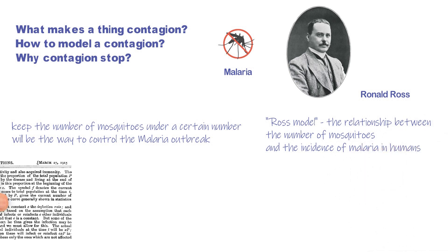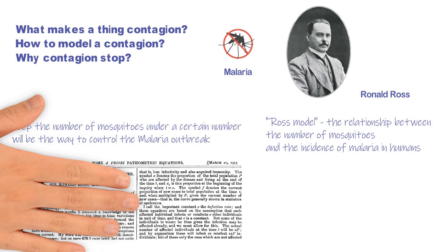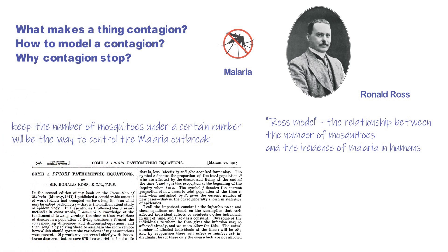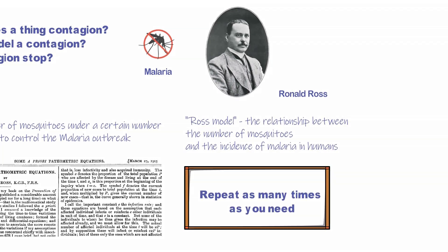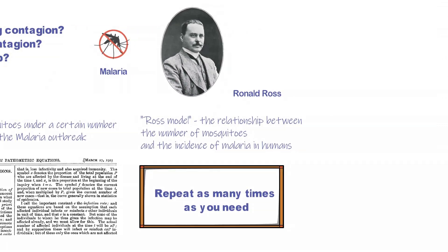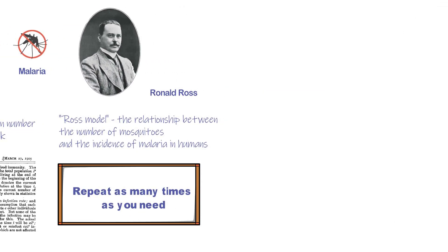Here is the paper he published in 1950. To find out whether one element affects the malaria outbreak as expected, we simply need to change the initial value of that parameter and calculate the result of the simulation.